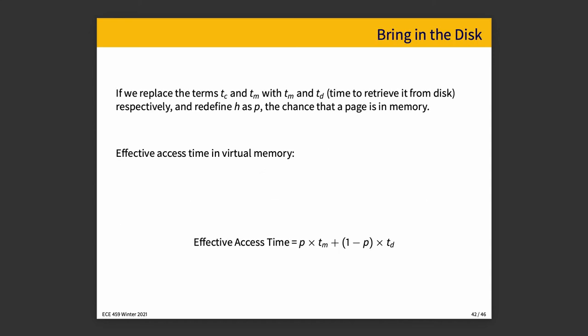If you are dealing with a system that has a hard drive, we replace Tc and Tm with Tm and Td — Tm being memory and Td from disk. We also redefine h as p, the fraction of the time that a particular page is in memory. The effective access time in virtual memory is then: p times the time to retrieve from memory, plus (1 − p) times the time to retrieve from disk.